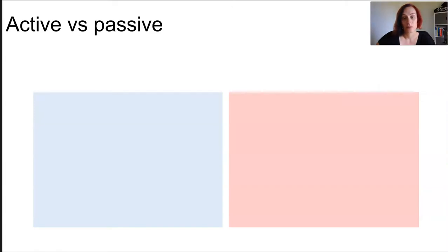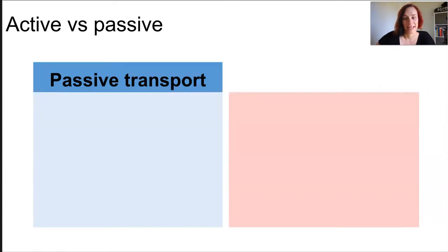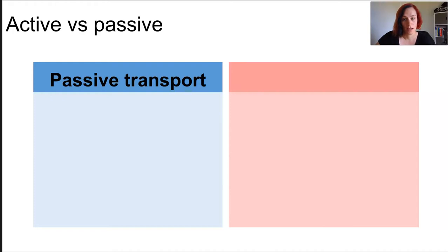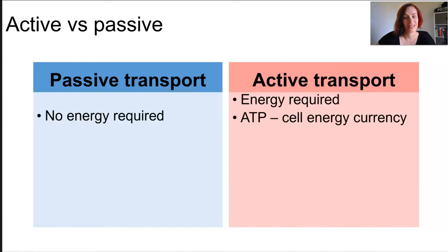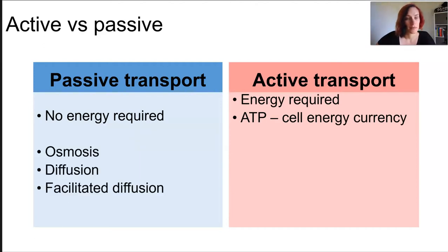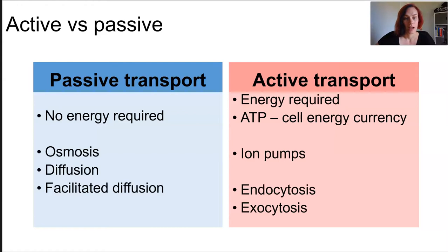There are two kinds of transport across the membrane that we are going to focus on: active and passive. Passive transport happens based on a concentration gradient. Active transport, however, requires ATP or energy to work against the concentration gradient. So the two main differences are: energy is required for active, versus no energy required for passive.